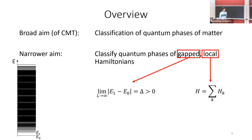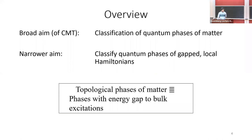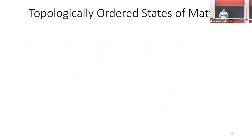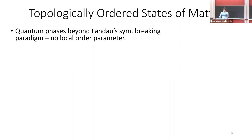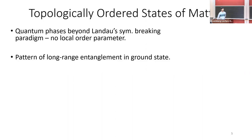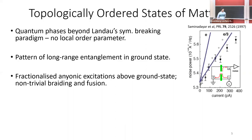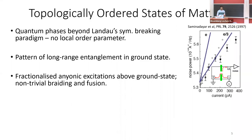There are also gapless phases that people consider, but today we'll just discuss gapped phases. The general understanding is that the low energy physics of systems with a gap to excitations should be described by some kind of topological quantum field theory, and so we call these topological phases. Topologically ordered states of matter are quantum phases that are beyond Landau's paradigm of symmetry breaking — there's no local order parameter, and they display a pattern of long-range entanglement in the ground state.